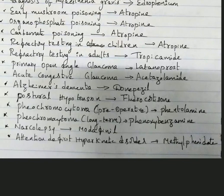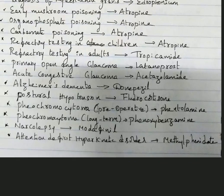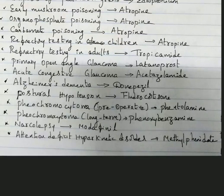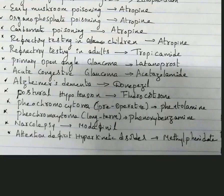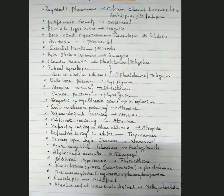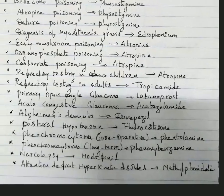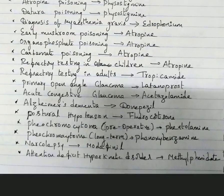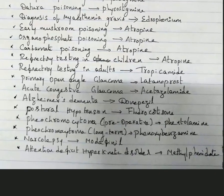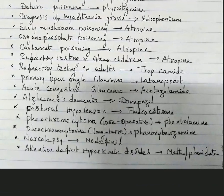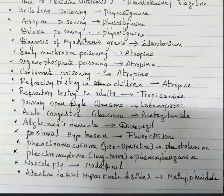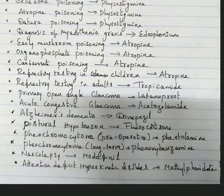Pheochromocytoma long-term treatment: phenoxybenzamine. So preoperative we give phentolamine, and long-term we give phenoxybenzamine. Narcolepsy: drug of choice is modafinil. ADHD (attention deficit hyperkinetic disorder): methylphenidate — we also read this in CNS.